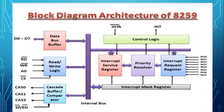This slide shows the block diagram of 8259. It consists of 8 blocks: the first is the data bus buffer, second is read/write control logic, third is control logic, fourth is cascade buffer or comparator, fifth is interrupt request register IRR, sixth is in-service register ISR, seventh is priority resolver PR, and the last one is the interrupt mask register.